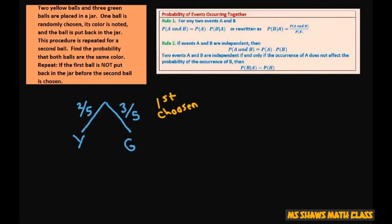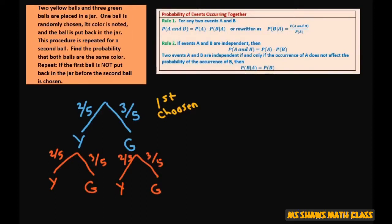Then we put the ball back in and draw again. So these branches are yellow and green. We're going to write two-fifths and three-fifths for the green, two-fifths and three-fifths. This is your second draw.